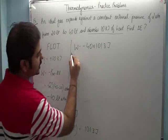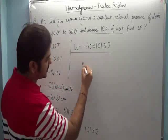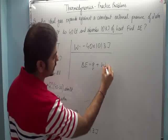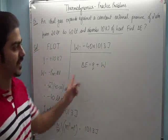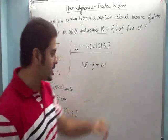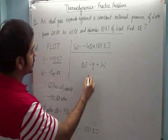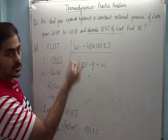Now, according to the first law of thermodynamics, delta E equals q plus W. The value of q is given in the question as 10, which is in kilojoules, so let me convert it to joules.